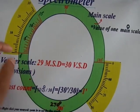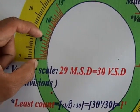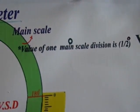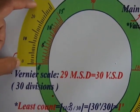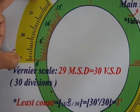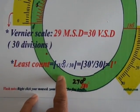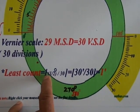From 0 to 5, there are 10 divisions. So the value of one main scale division is half a degree. The value of one main scale division is half a degree or 30 minutes, and there are totally 30 vernier scale divisions as we have said earlier.